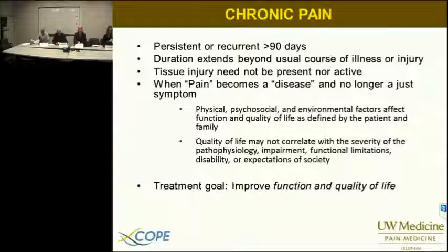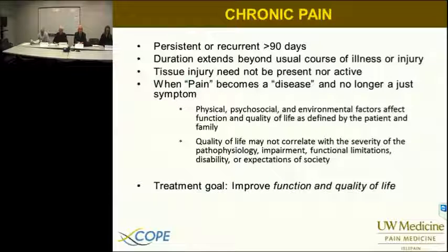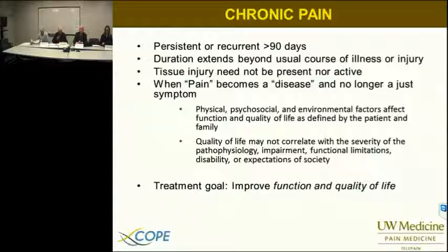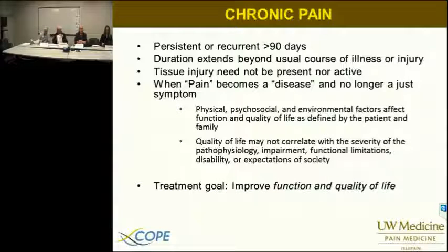Chronic pain is much more complicated. By definition it's longstanding — lots of variations, but the greater-than-90-day rule can apply. Other definitions call for pain beyond expected healing, but the objective measure is more than 90 days, extending beyond the usual course of injury. Importantly, tissue injury need not be present or active. When pain becomes a disease, it is far more complicated — it's more than a symptom of a previous biomedical event, but is driven by psychosocial and environmental factors. The patient's quality of life often does not correlate to the severity of the pathophysiology, and our treatment goals are to improve function and quality of life.